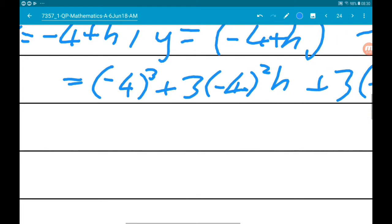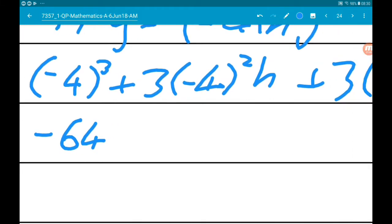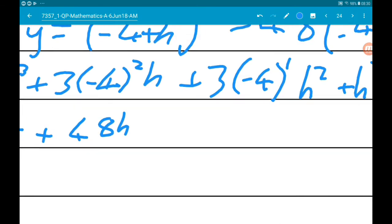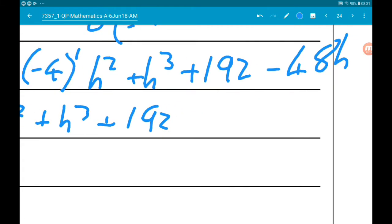Minus 4 cubed is minus 64. Minus 4 squared is 16. 3 times 16 is going to give us add 48h. 3 times minus 4 is minus 12, so minus 12h squared, add 1h cubed, add 192 minus 48h.